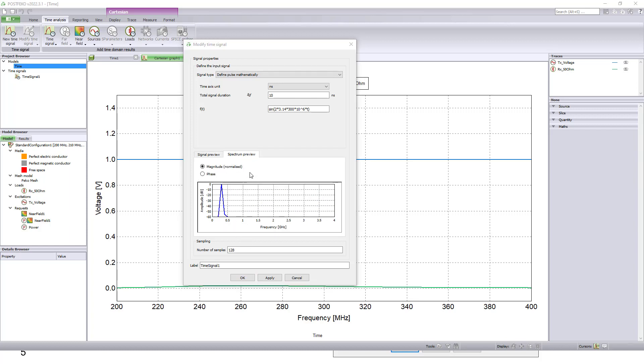The spectrum preview of this time input signal is important. You can determine the simulation frequency in CAD FEKO, the start frequency and end frequency. As you can see here, the center frequency is 300 MHz. And then I use the starting frequency 200 MHz and end frequency 400 MHz. So that's why the frequency span is enough to cover this time signal.